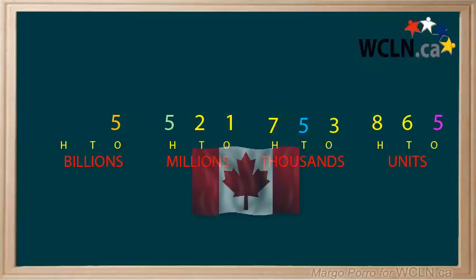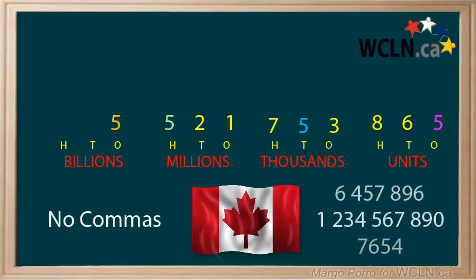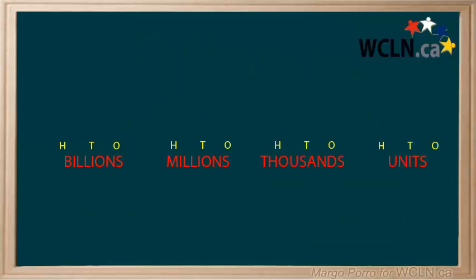Did you know that in Canada and most of the world no commas are used in numbers? Our numbers look like this. Only the United States and a couple of other countries in the world use commas. Canada uses international rules for the metric system. When a numeral has more than four digits, we use a space between every group of three, working from right to left.